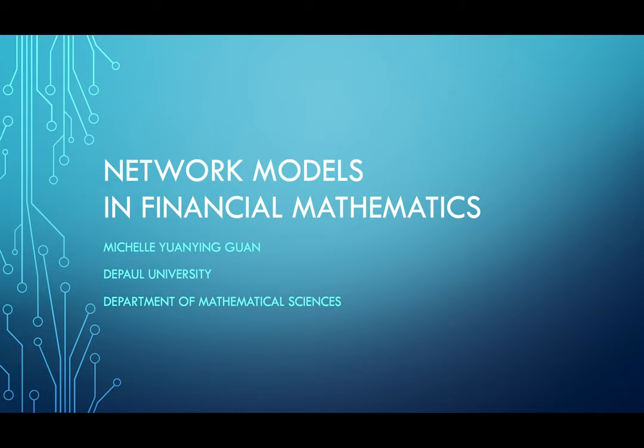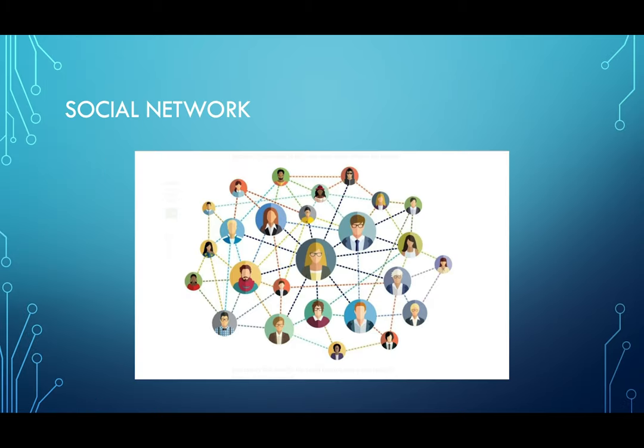So when we talk about network models, what is the first thing that comes into your mind? A very frequently used network model that we see every day is a social network. Nowadays, the social network can be built up on social media such as Twitter, Facebook, and Snapchat. If you consider each user as a node, then the relationship or the friendship between these nodes are considered as edges in this network.